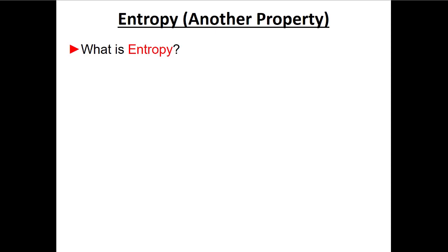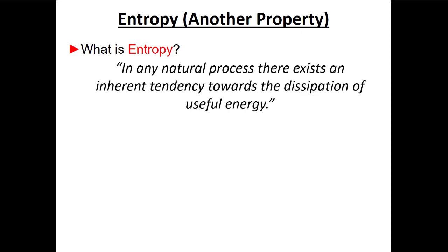In order to understand the second law, we have to understand another type of property. We've been looking through thermodynamic tables that have specific internal energy u and specific enthalpy h, which is u plus pv. But there's also this s — this little s — and this term is called specific entropy.